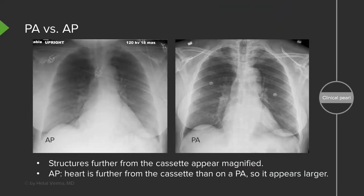The standard is always performed in the PA — not the AP. On the AP view, structures further from the cassette appear magnified. The heart, being furthest from the cassette or detector, appears larger on the AP view than on the PA view, so the PA gives a better anatomical representation. You can also see that on the AP view everything appears slightly hazy, while on the PA view structures are more clearly defined.